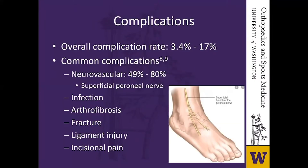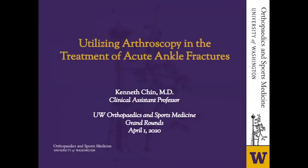The overall complication rate for ankle arthroscopy itself is somewhere between 3.4 to 17% in the literature. The most common complication by far is neurovascular injury, particularly to the superficial peroneal nerve, primarily occurring during creation of the anterolateral portal. Other complications include infection, arthrofibrosis, fracture, ligament injury, and incisional pain, but the risk to the SPN is by far the highest in ankle arthroscopy. I'll now turn it over to Dr. Chin, who will go into more detail about utilizing arthroscopy in the treatment of acute ankle fractures.